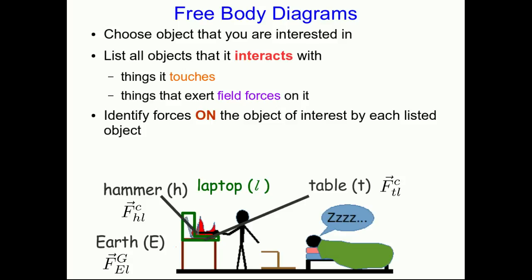Now list all the objects that the object of interest interacts with. Perhaps start with the objects that it touches, establishing notation as you go, and then things that exert field forces on it. Next, identify all the forces on the object of interest by each listed object. I can't stress the importance of the word on enough. Don't list forces exerted by the object of interest. They don't affect this object. So ignore them.